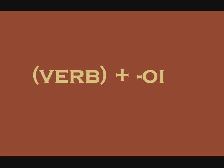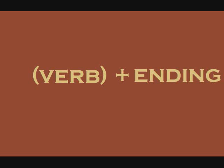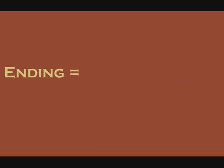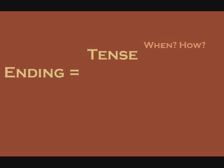To use a verb in a sentence, you have to remove that OI and put on an ending. This ending will be made up of two parts: a tense part, which tells you when the action was done, and a person part, which tells you who did the action.